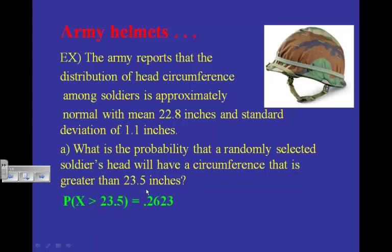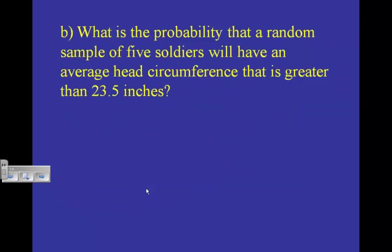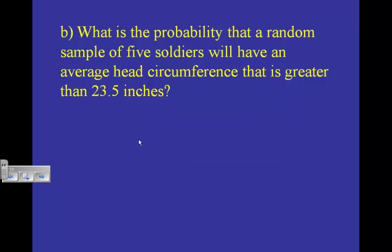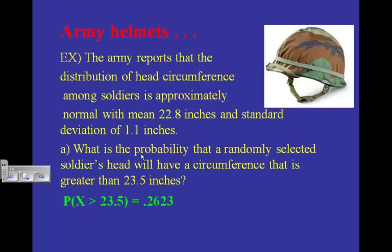Now here's a variation. What's the probability that a random sample of five soldiers has a mean head circumference greater than 23.5 inches? What normal curve are we working with now? Something has changed — now we have five soldiers instead of a single soldier.